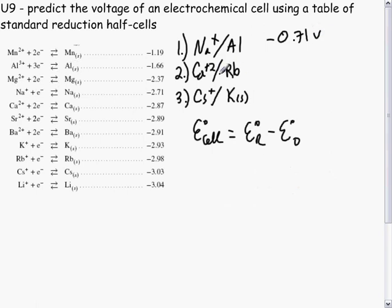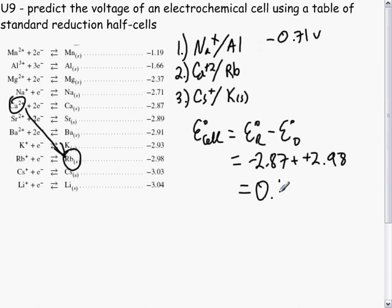For the next reaction, calcium plus 2 and rubidium, this will be a spontaneous reaction. Calcium is negative 2.87 minus negative 2.98, which is equal to 0.11 volts.